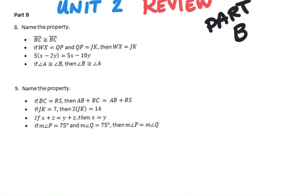All right, here's Part B of the Unit 2 review — hopefully it's shorter than Part A. It starts with 'name that property.' Right off the bat I see segment BC is congruent to segment BC, and since it's the same segment on both sides, I know that is the reflexive property.